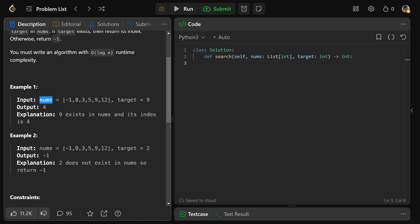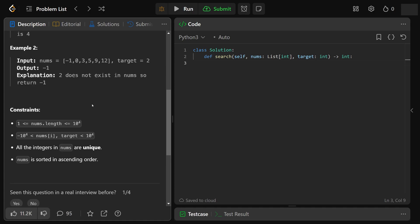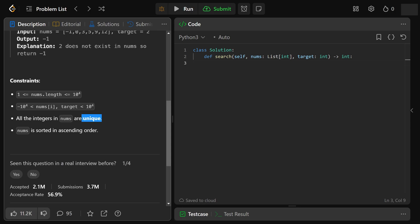To make sure we understand the problem, we're given an array of numbers and a target value of nine. We want to find nine in this array and locate its index at position four. For the second example, the target value of two is not in the array, and therefore we return minus one. Also, there's an extra constraint that all the integers in nums are unique, so we have no duplicates.